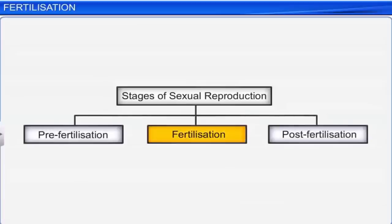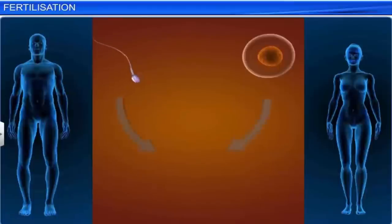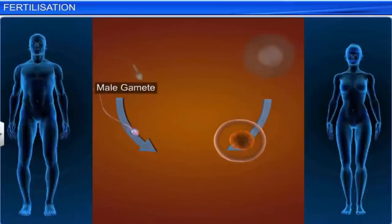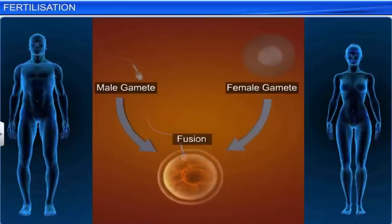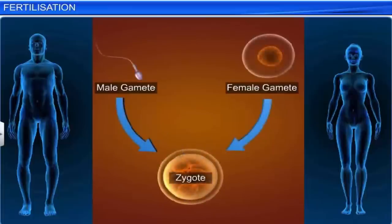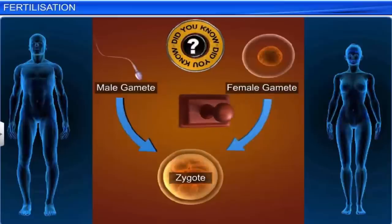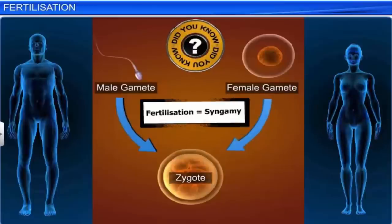Fertilization, the second stage in sexual reproduction, is also the hallmark of the process. During this stage, the male and female gametes fuse to form a diploid zygote. Did you know that syngamy is the other word used to describe the process of fusion of gametes, or fertilization?